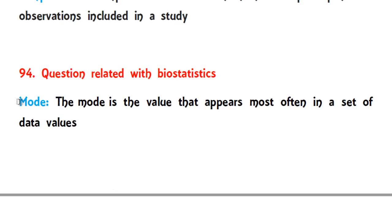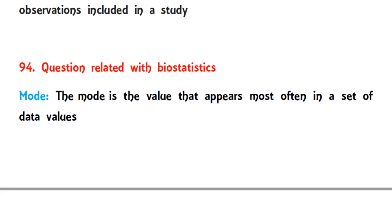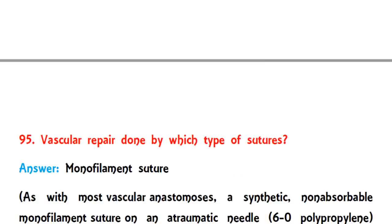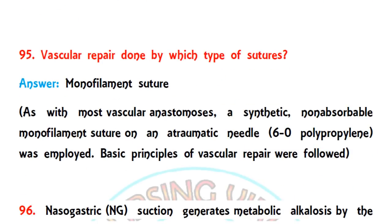The next question is from the biostatistics side. The correct answer is mode. Mode is the value that appears most often in a set of data values — whichever number repeats most frequently in a particular list of numbers.